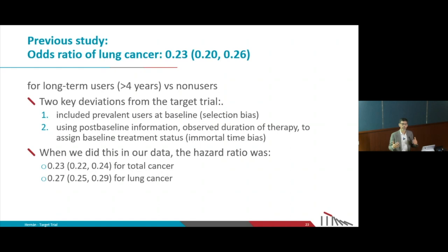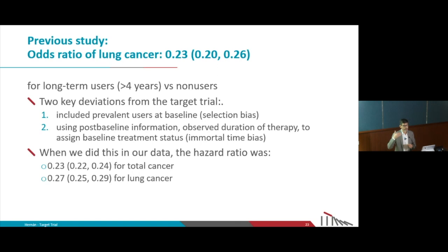In a trial, we start follow-up at the time the treatment starts — at the time the intervention begins, at the time the decision is made — not two years later. That is a possible source of selection bias. The other problem is that people were assigned to one group or the other based on what they were doing in the future. At baseline, people were put in the 'more than four years of statins' group based on whether they would be taking statins for more than four years in the future.